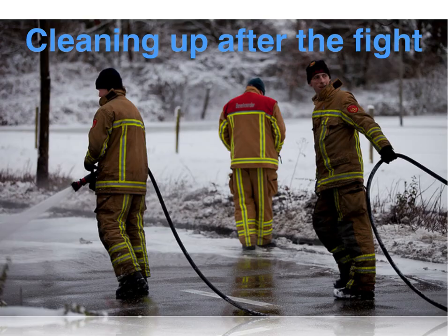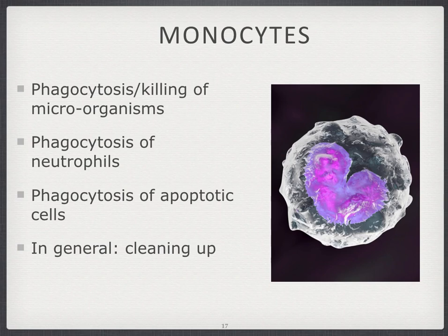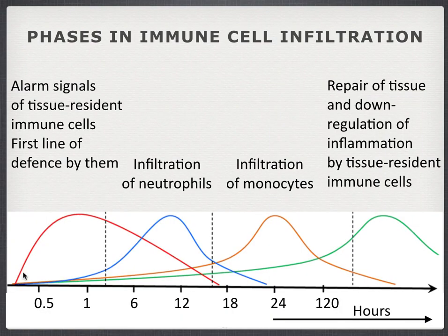All of that damage needs to be cleared — the dead cells, the dead bacteria, and the dead neutrophils. That's when the monocytes come in. Monocytes can help with phagocytosis and killing of microorganisms, but they can also eat dead cells, including the neutrophils that have died and made traps. So they start cleaning up, which is a first step toward healthy tissue again.